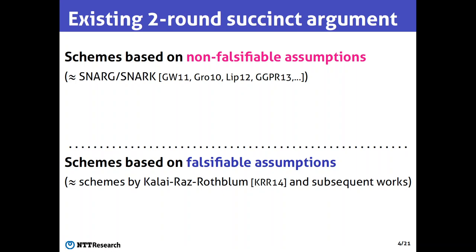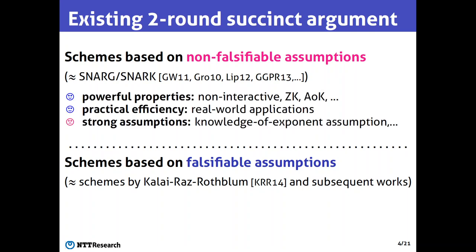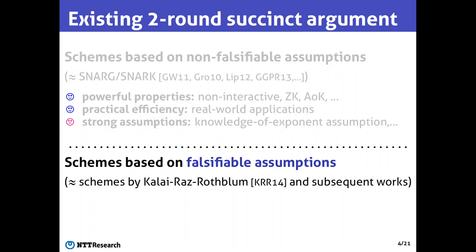Informally speaking, the existing two-round succinct arguments can be separated into two groups. The first group is schemes based on non-falsifiable assumptions, and the second is schemes based on falsifiable assumptions. Non-falsifiable assumptions are considered strong assumptions in theoretical cryptography. So even though many schemes based on non-falsifiable assumptions have desirable properties and relative efficiency, in this work we do not consider these schemes. Rather, we focus on schemes based on falsifiable assumptions, and in particular we focus on the scheme by Kalai, Raz, Rothblum, and subsequent works. From now on, whenever I say succinct argument, I always mean succinct argument based on falsifiable assumptions.